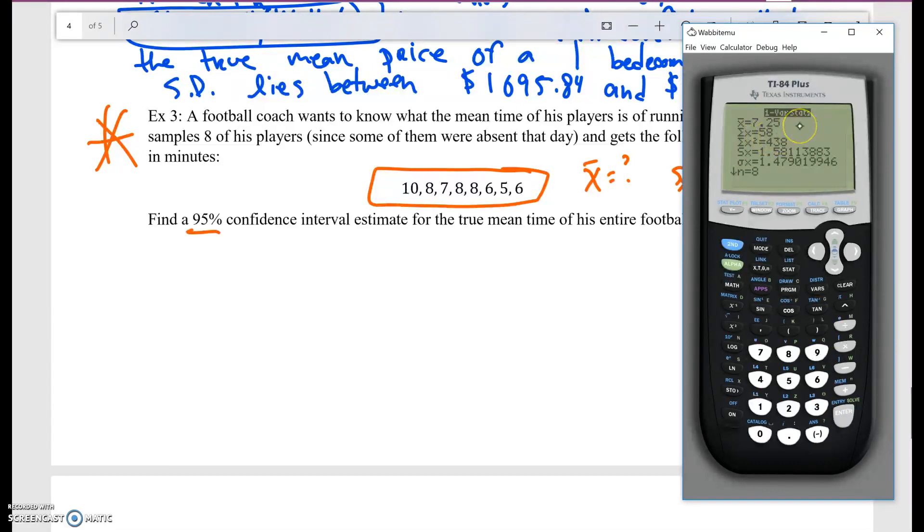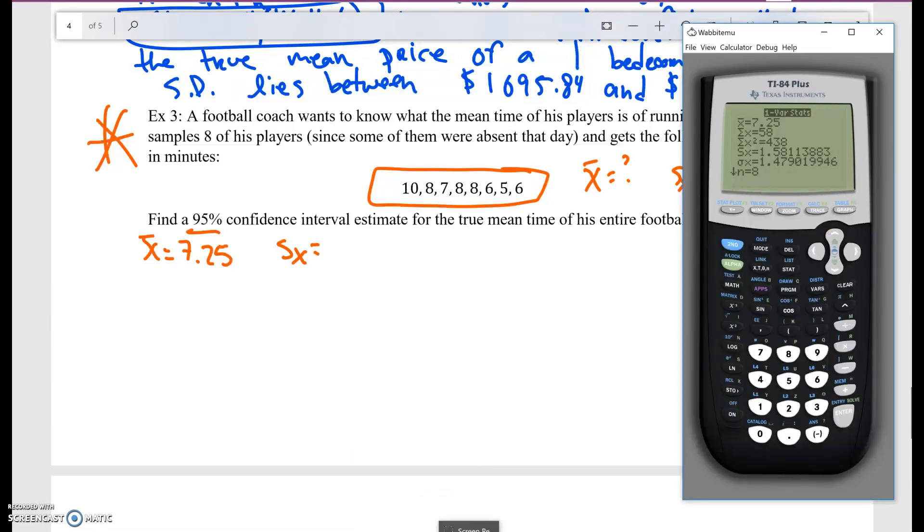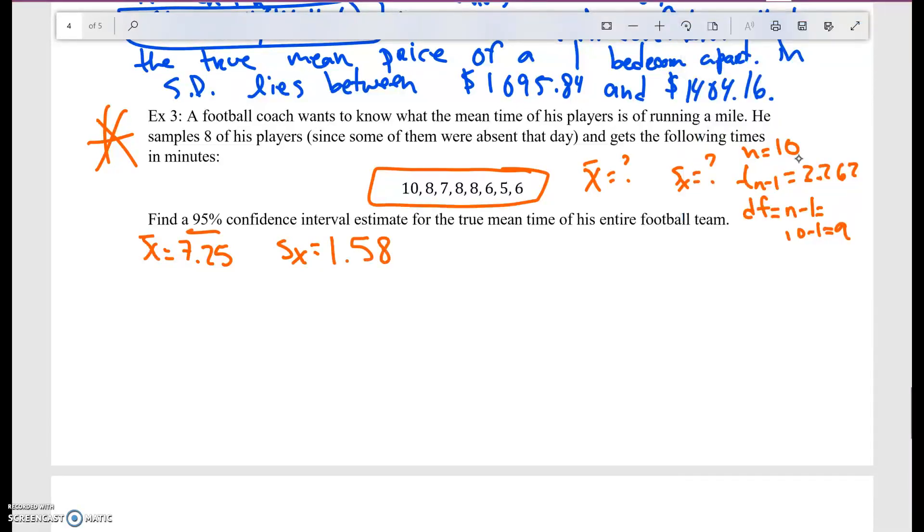What you're going to get is actually what x bar is, which is in this case 7.25. So x bar, in this case, is 7.25. And then s sub x, in this case, our standard deviation, s sub x is 1.581.